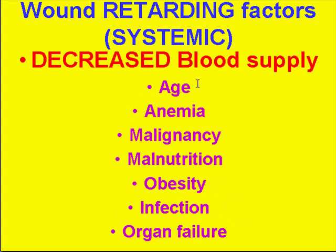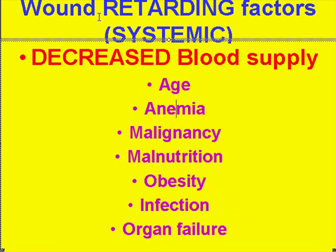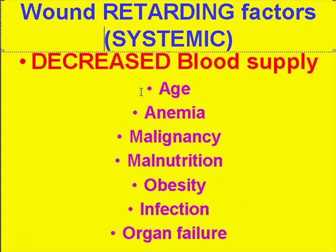For systemic factors: older people don't heal as well as younger people. People who don't have enough oxygen reaching tissues — anemic people — don't heal as well. People with malignancies, malnourished people, obese people, those with systemic infection, and those with major organ failure — kidney, liver, anything — don't heal as well. These are all logical. But once again, decreased blood supply is the number one systemic retarding factor.